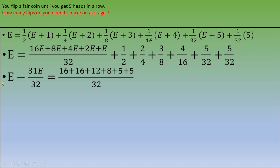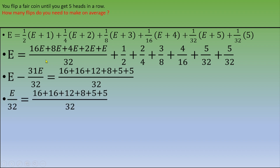Doing the math, we get E minus 31E over 32 equals (16 plus 16 plus 16 plus 12 plus 8 plus 5 plus 5) over 32. This simplifies to E over 32 equals 62 over 32, so the final answer is E equals 62. Thank you for watching this video and I hope to see you in the next one.